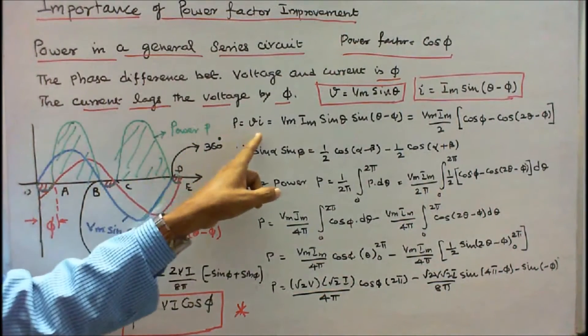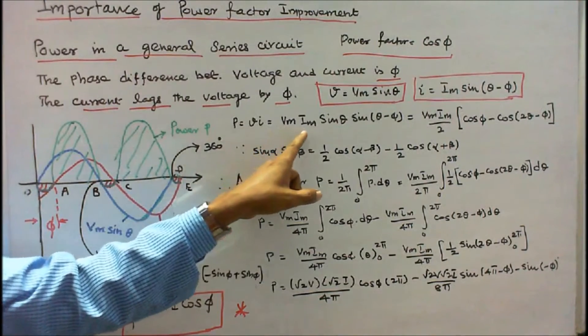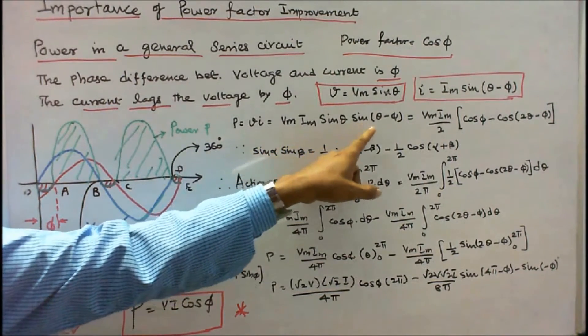Power P is equal to V times I. That is equal to Vm times Im times sin θ times sin(θ - φ).